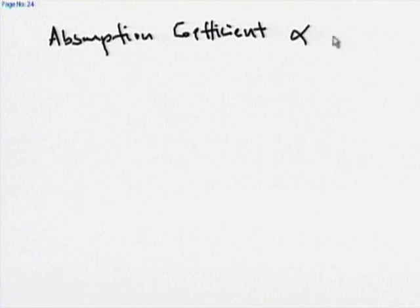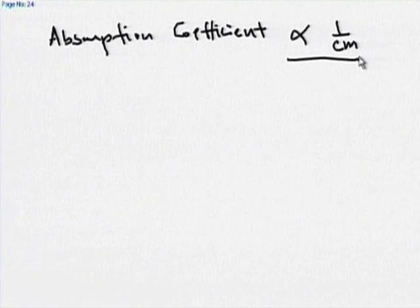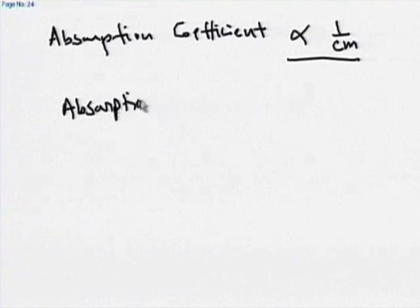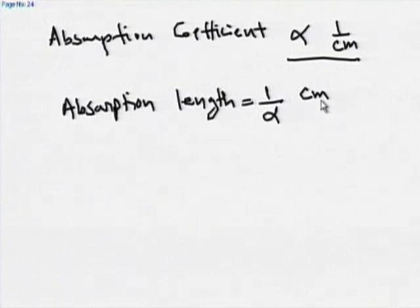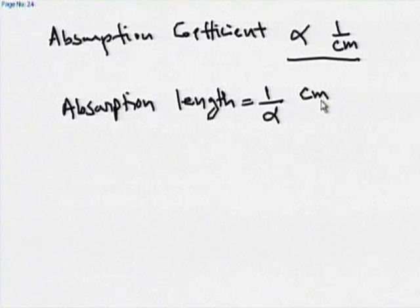The absorption coefficient alpha has units of 1/cm. If I take the inverse of alpha, I get units of length — called absorption length. Absorption length is 1/alpha, with units of centimeters. Absorption length is the average thickness of material required to absorb the photons of a given energy. For example, if alpha = 10⁴ per cm, the absorption length is 10⁻⁴ cm, which equals 1 micrometer.